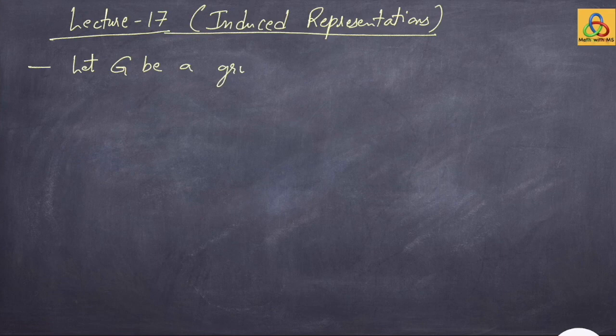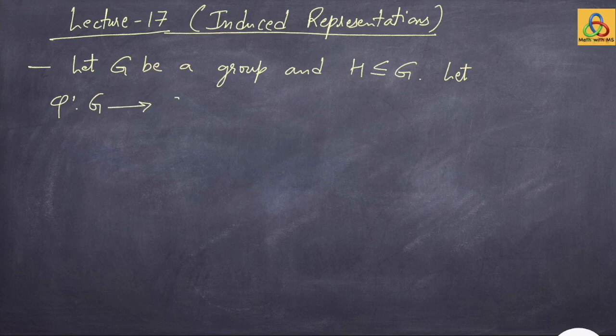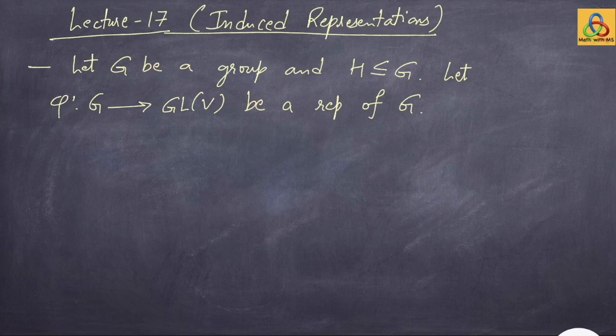Let G be a group and H a subgroup of the group G. Let phi from G to GL(V) be a representation of G. Then we can restrict this representation phi on the subgroup H, just as a map.